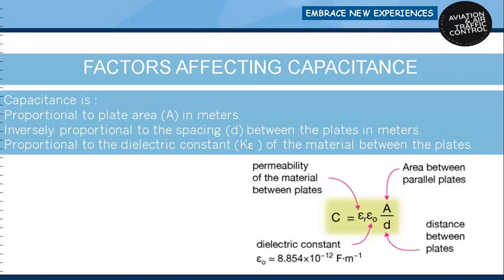If we keep constant area and distance and insert glass between the plates instead of air, the capacitance is multiplied by a factor of approximately seven. Thus capacitance is also proportional to the dielectric constant of the material used between the plates. The formula for capacitance is: C = (dielectric constant × plate area A) / spacing d. The dielectric constant equals ε_r × ε₀, where ε₀ = 8.854 × 10⁻¹² F/m, and ε_r is the permittivity of the material between the plates.